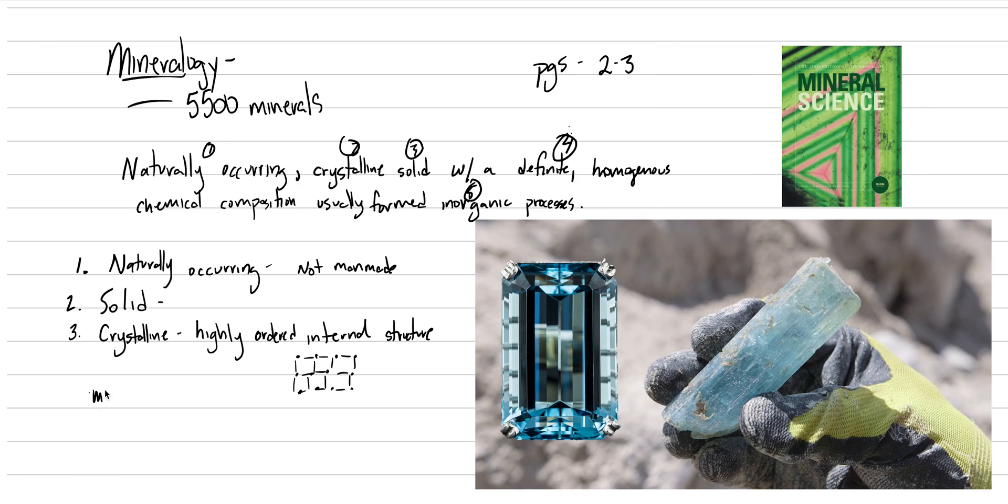If it does not have a highly ordered internal structure, the material might be considered a mineraloid. Something like opal does not have a highly ordered internal structure, but it does satisfy the rest. Something else would be glass. Something like obsidian. This is amorphous, which means it doesn't have that crystalline structure, even though it does satisfy the other criteria.